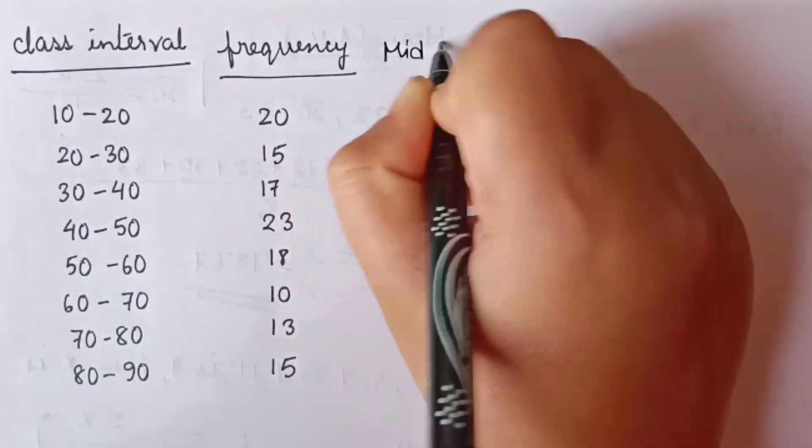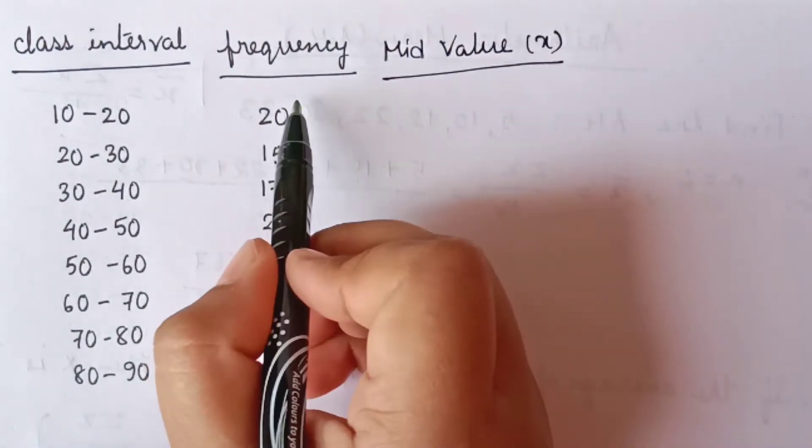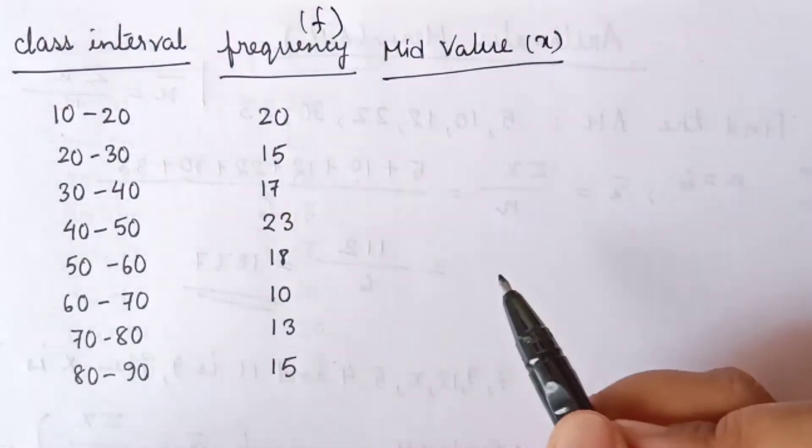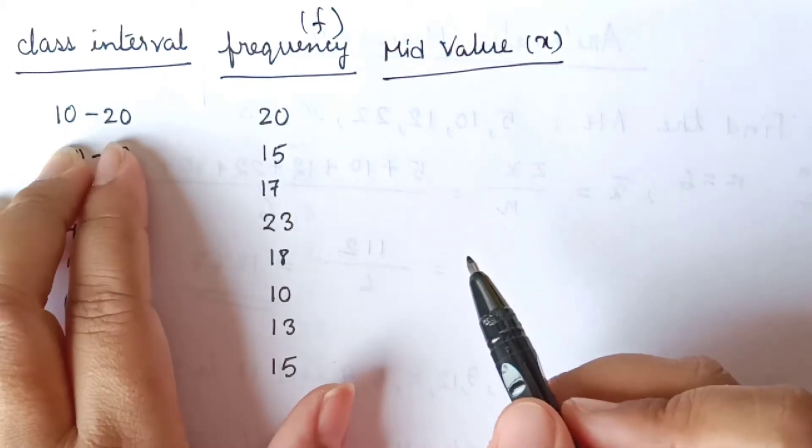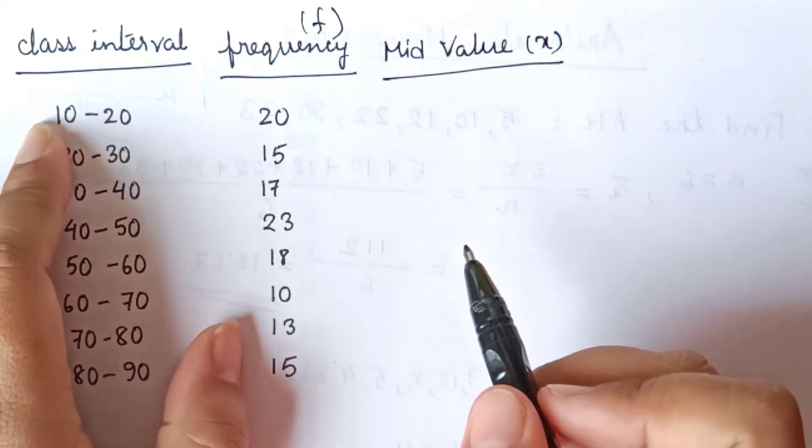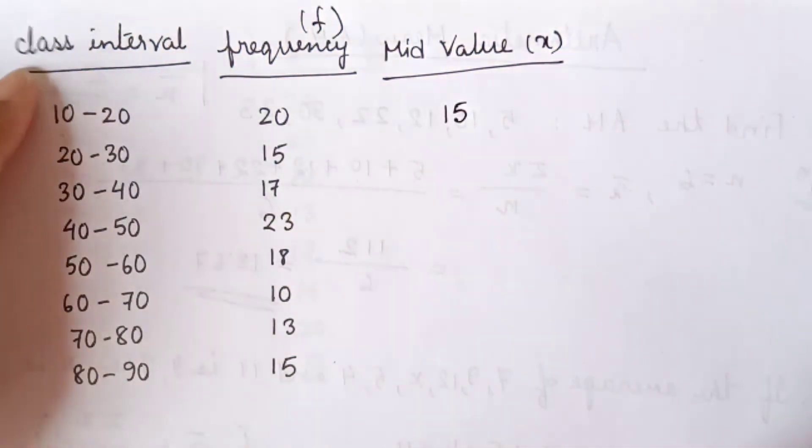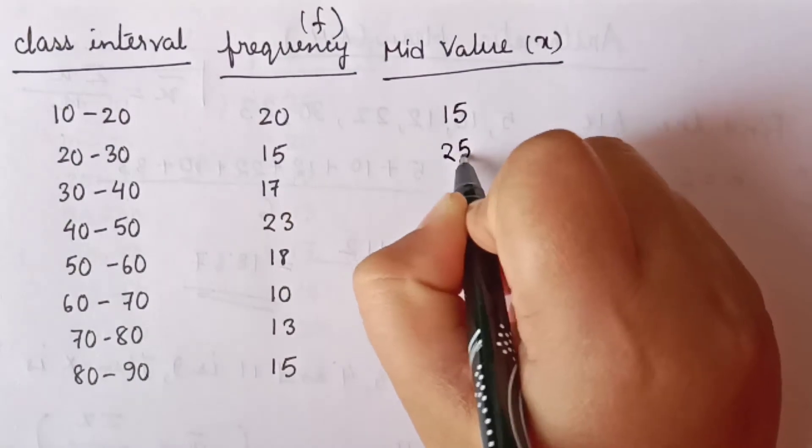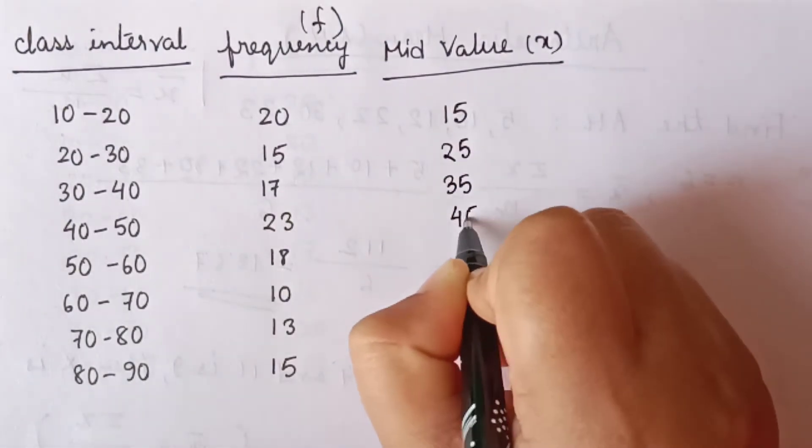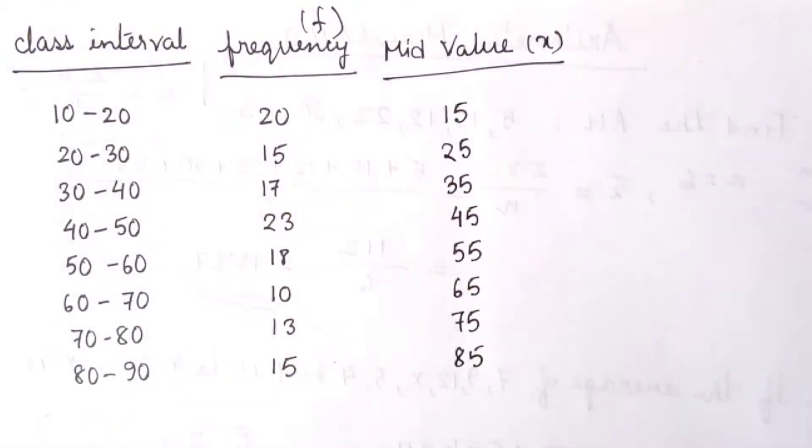The mid value is denoted by X and frequency is denoted by F. So what is the mid value of 10 and 20? If you observe the values, the mid value of 10 and 20 equals 15. In this way, we will find out all the mid values of the class interval: 25, 35, 45, 55, 65, 75, 85.